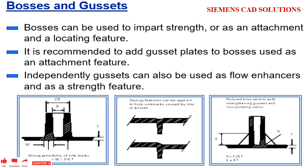In this video we are going to see the design guidelines for the boss and the gussets. Boss is the feature which is used to attach the plastic part with the mating part by using fasteners. Boss can be used to impart strength or as an attachment and locating feature. If you have a pin or mating part, you have the boss, then it will act as a locating feature.